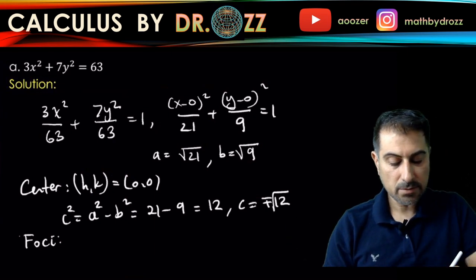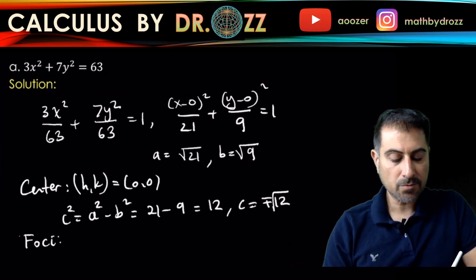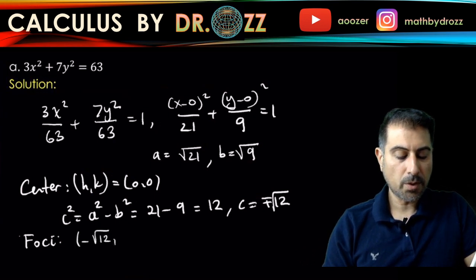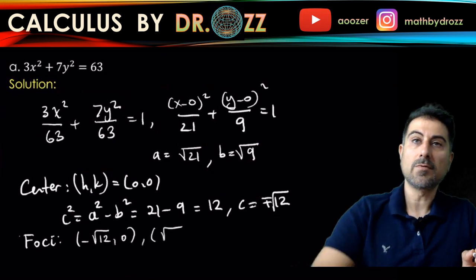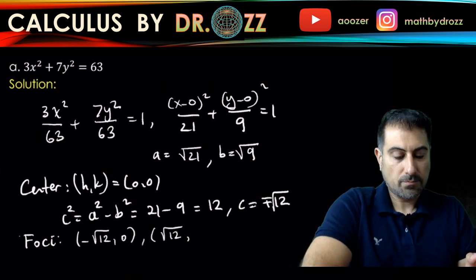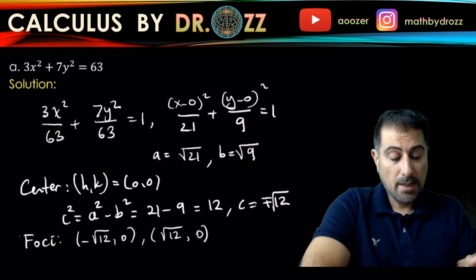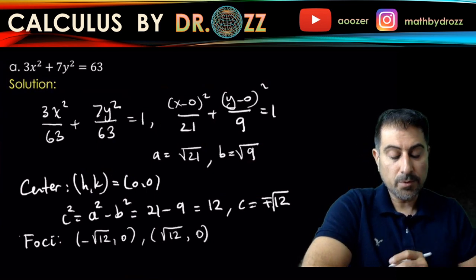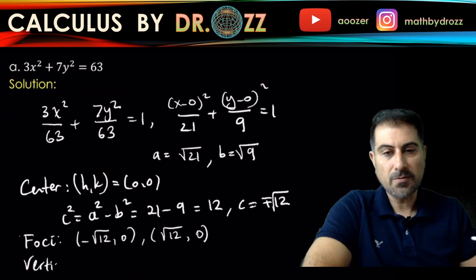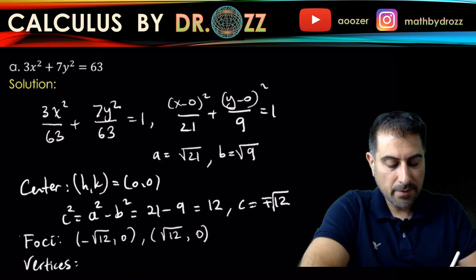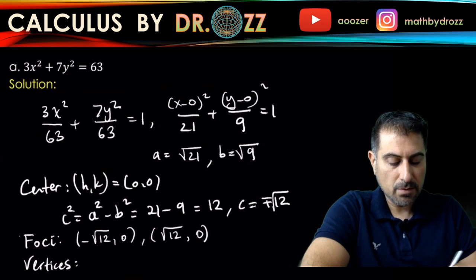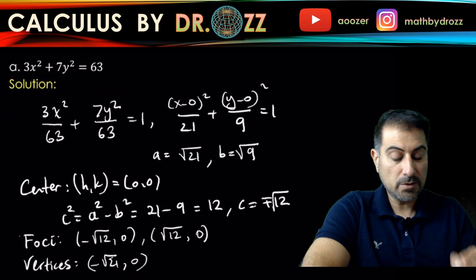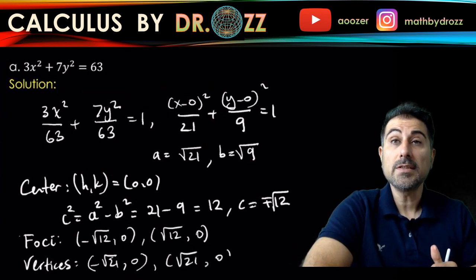Okay, to the left to the right, so we're going to have negative square root of 12, 0 and plus square root of 12, 0, for the coordinates of foci. How about the vertices? Okay, vertices are A units far from the center. Okay. So we have negative radical 21, 0, plus radical 21, 0, for the coordinates of the vertices.